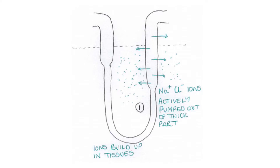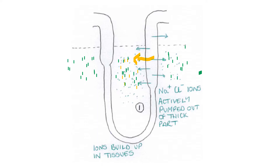The first thing that happens is that sodium and chloride ions are actively pumped out of the thick part of the ascending limb. When they are pumped out, they move out into the surrounding tissues and start to build up there. So you start to build up ions in these tissues because you've moved them out.